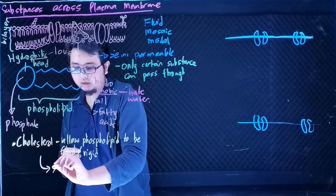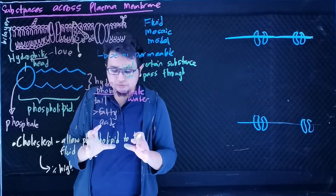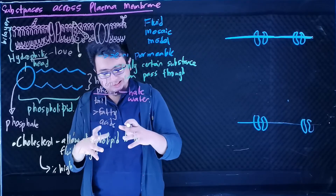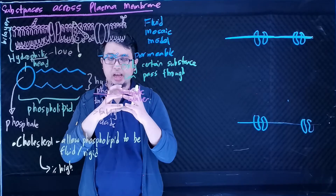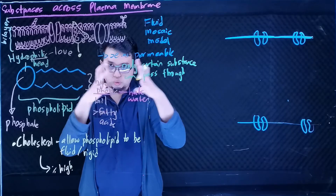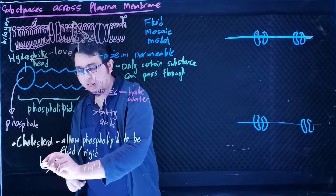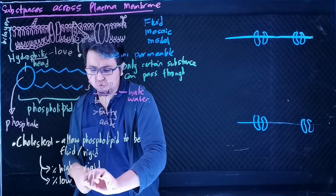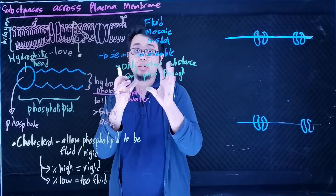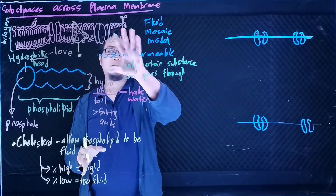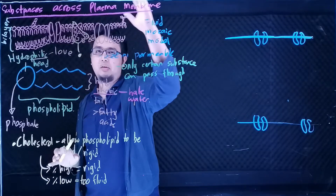If your cholesterol concentration is high, the phospholipid becomes rigid and hard. The plasma membrane becomes too hard, substances can't pass through, and the cell will experience stress because it can no longer move its structure, causing it to break apart. If the percentage of cholesterol is low, the cells become too fluid — similar to tissue in water shaking apart — and the phospholipid bilayer will break apart, causing all cell content to move out.